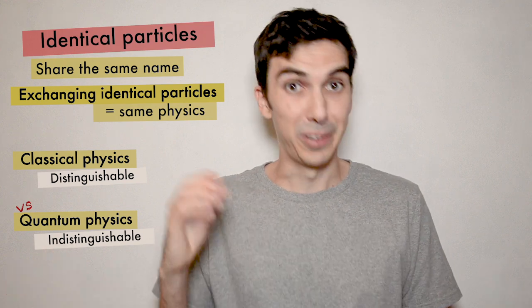In classical physics, identical particles are distinguishable, but in quantum physics, identical particles are indistinguishable. Today we will learn what the precise meaning of these words is and that will prepare us to study systems of many quantum particles. So let's go!